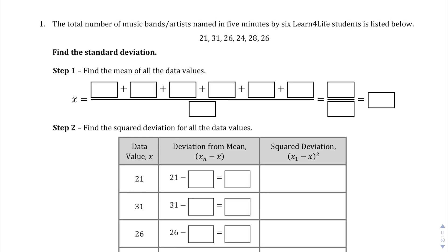So, in this case, question number one on page 11, we're given this data set of the total number of music bands and artists named in five minutes by six Learn4Life students listed below. So, 21, 31, 26, 24, 28, and 26.